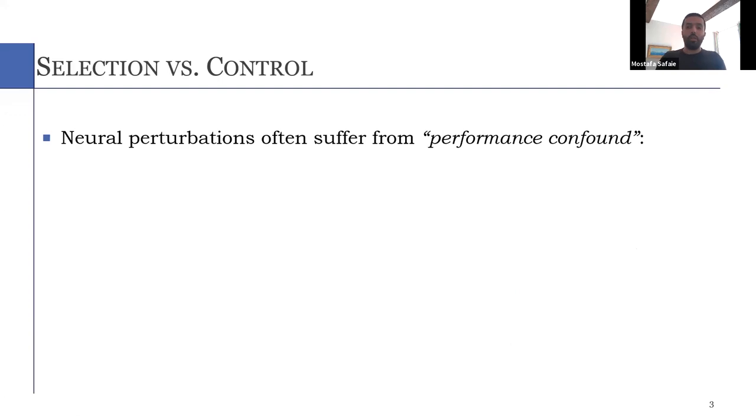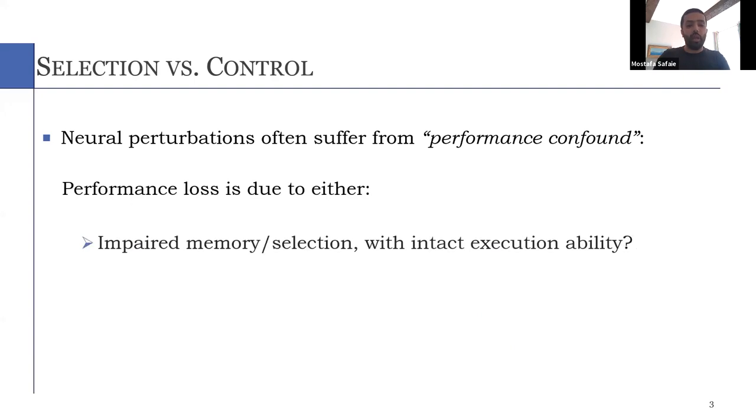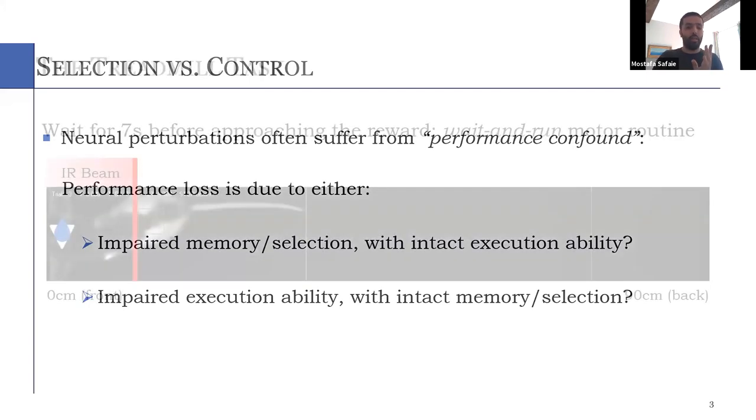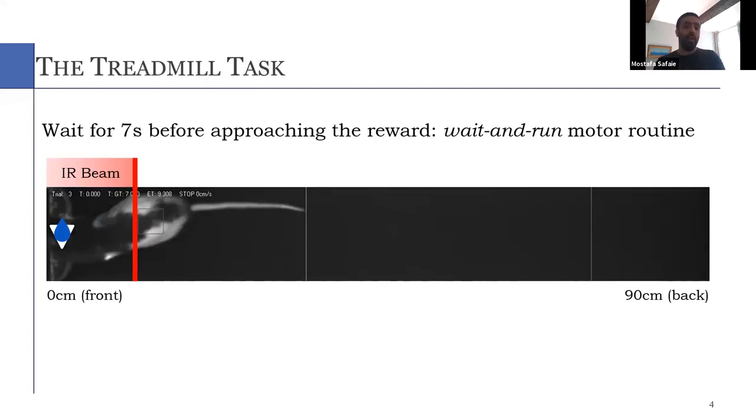But testing this hypothesis is a bit complicated because using neural manipulation techniques usually leads to what is called performance confound, meaning that if we see a performance loss, it could be either due to an impaired memory or selection mechanism with intact execution ability, or it could be due to impaired execution ability without intact memory or selection. And it's difficult to tell these two apart. So to do just that, we use several behavioral tasks.